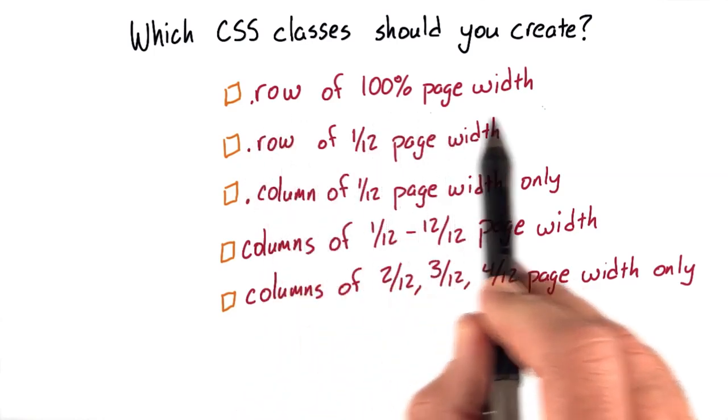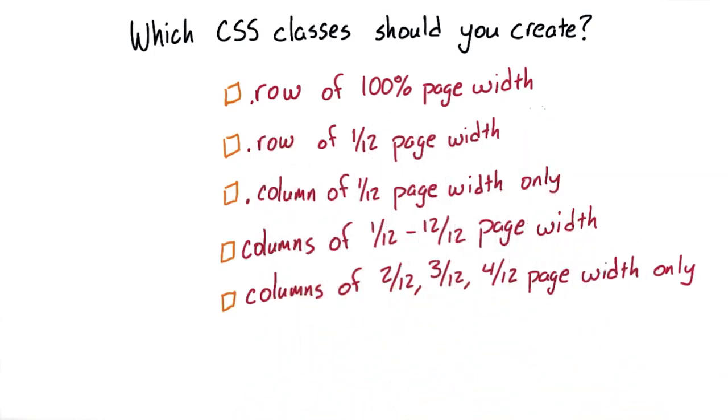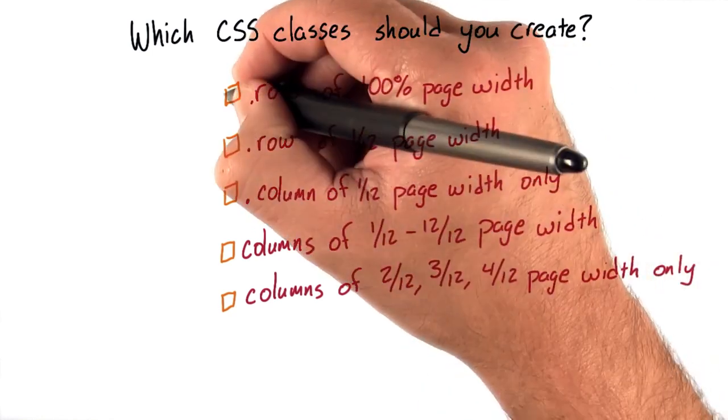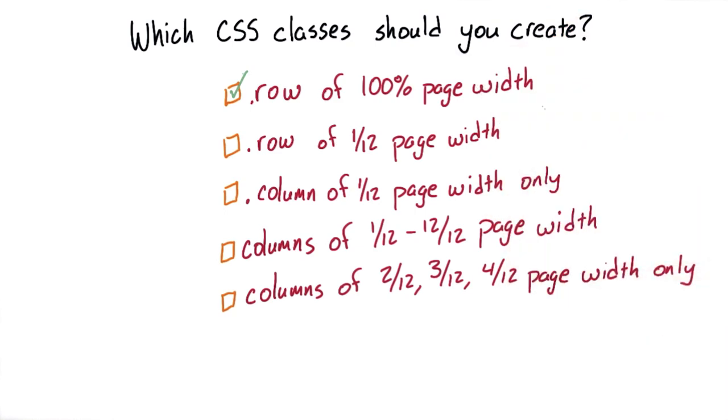A row class of 100% of the page width. Well, this seems pretty necessary because we want each row of columns to take up as much space as they can. So we will check that off because we need it.